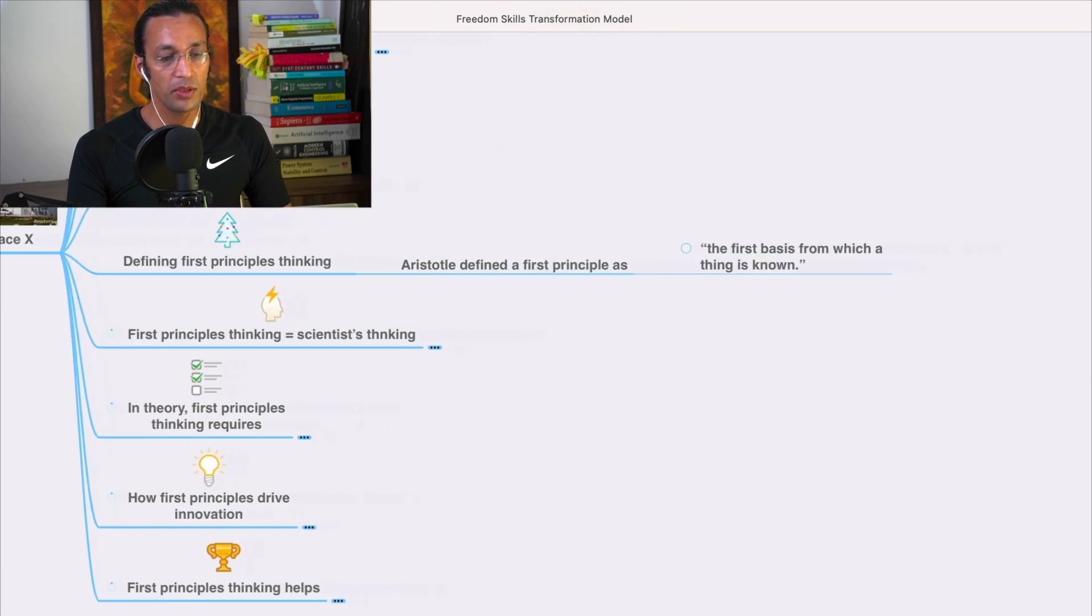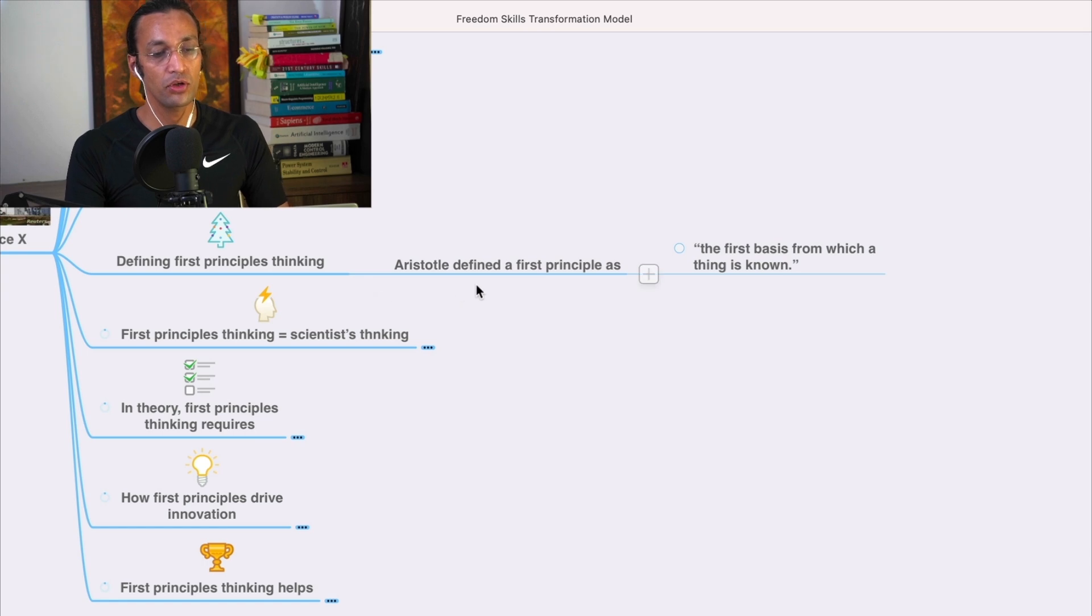Let's define it. Aristotle defined first principles as the first basis from which a thing is known. If we know what is the first basis of a thing from which it is known, then we can come up and find hundreds of ways to make it innovative, creative, and solve problems.